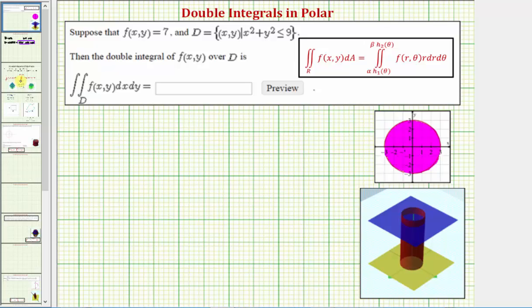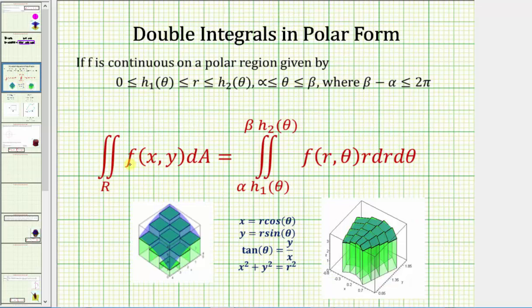When converting to polar coordinates, it's important to remember that our function f of x comma y must be written as a function of r and theta, or f of r comma theta, using these formulas here. And then differential a, which is dx dy or dy dx in rectangular form, is equal to r dr d theta in polar form. So we have this extra factor of r when converting from rectangular to polar form.